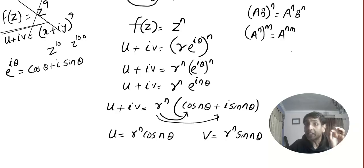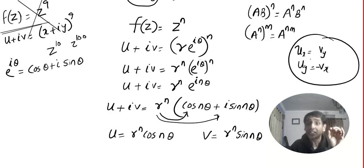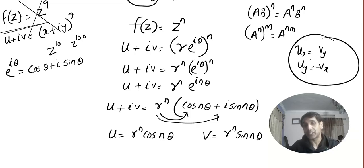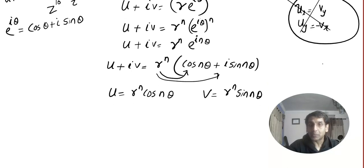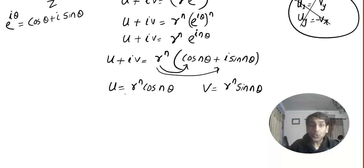Now look at this. In Cartesian form, the CR equations were u_x = v_y and u_y = −v_x. But I cannot use these because I got u and v in terms of r and θ — the polar variables.